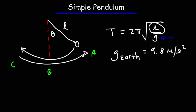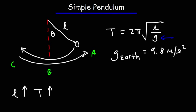Since L is in the numerator of the fraction, increasing L will increase the period — it will take longer for the bob to go from A to C and back. If you increase the gravitational acceleration, for example by bringing the pendulum to a planet with stronger gravity, the period will decrease. Because G is in the denominator, there is an inverse relationship between G and T.